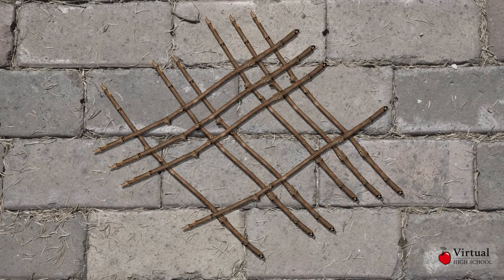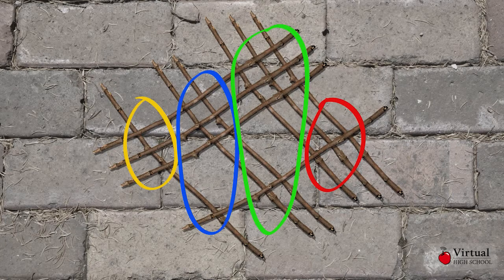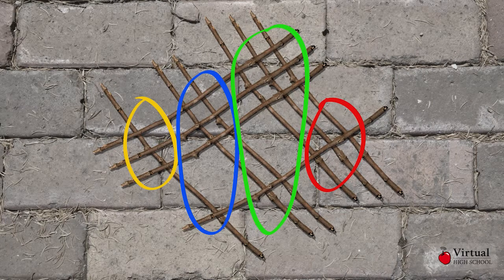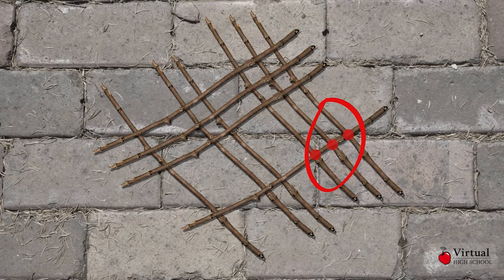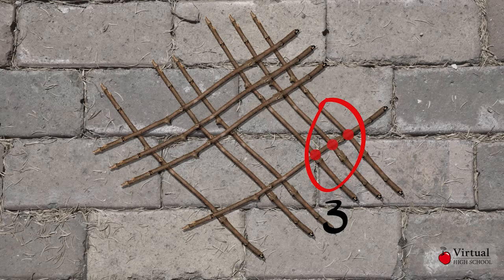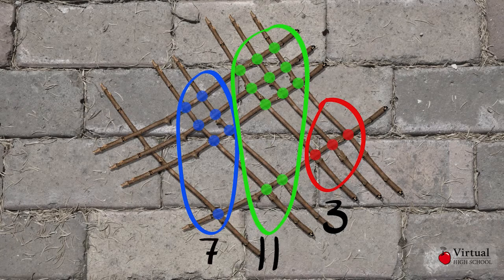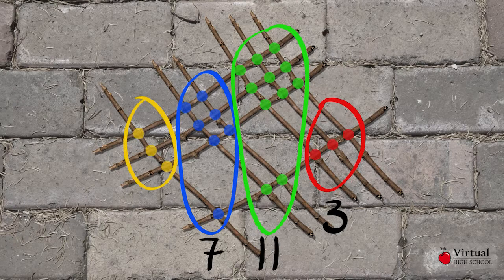Imagine this pile of sticks divided into 4 groups. Let's count the number of times the sticks cross one another in each group. In that first group, we can count that there are 3 crosses. The next 2 groups have 11 and 7, and the last has 3 again.